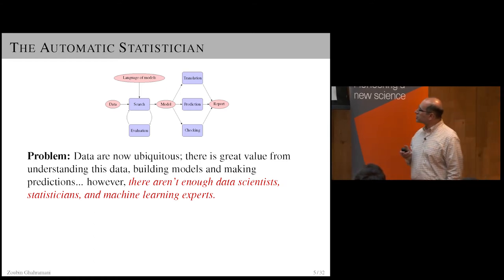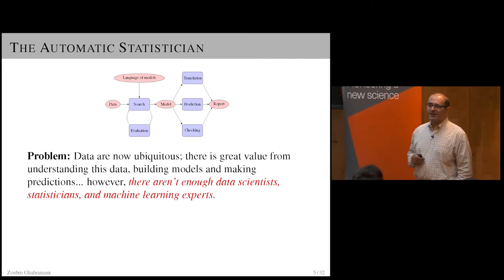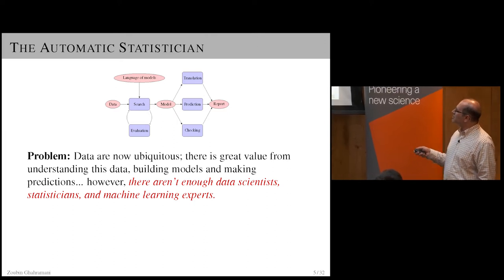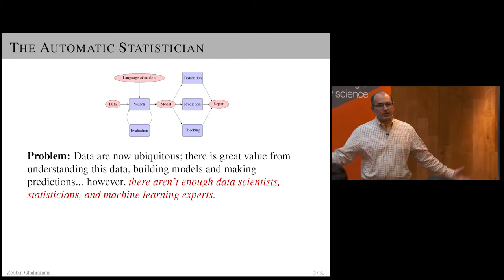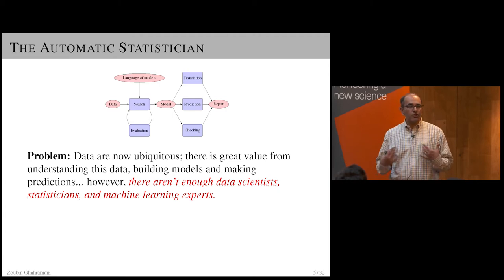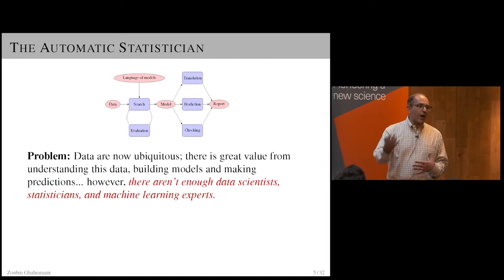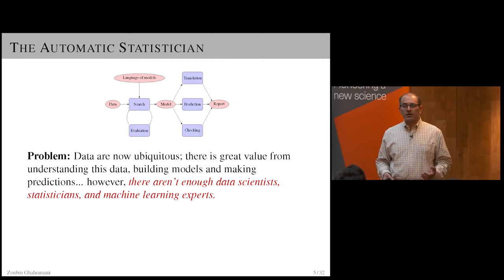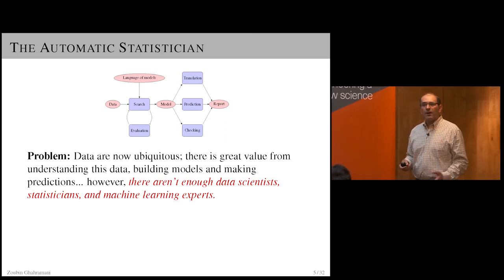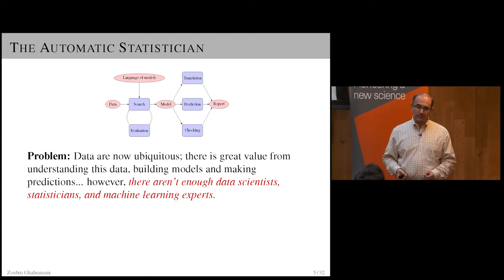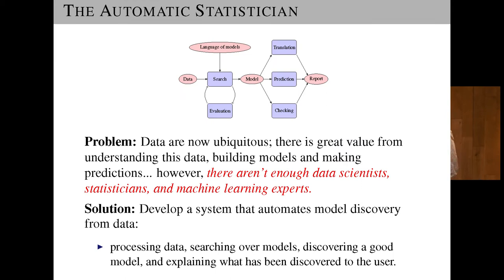The solution is to develop a system that automates model discovery from data. The real ambition is a system that does everything end-to-end, where you have a conversation with the system about the data — the system can ask you questions and you can ask the system questions — and through that conversation you figure out what's of interest. A key ingredient is that matchmaking process of discovering a good model for the data, which is currently done in a very ad hoc way.